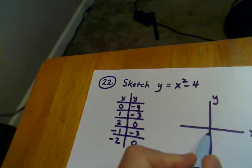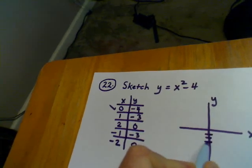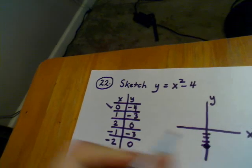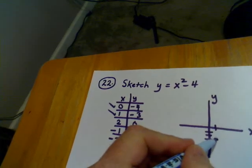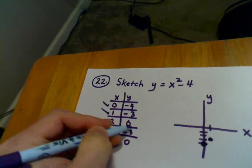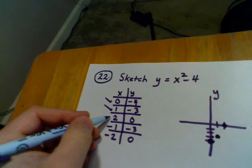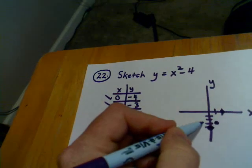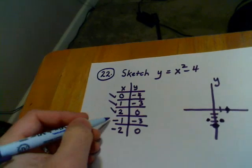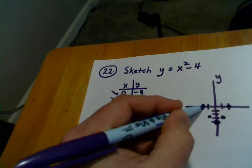If I play a connect-the-dots game and plot these points, let's start with 0, negative 4. And then let's plot 1, negative 3. And then let's plot 2, 0. And then let's plot negative 1, negative 3. And then let's plot negative 2, 0.